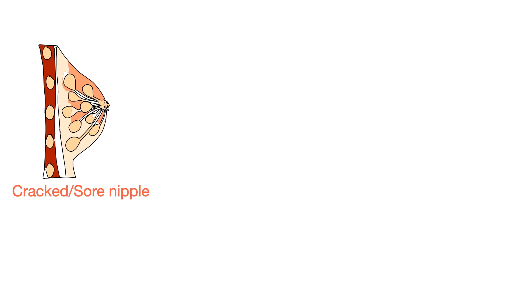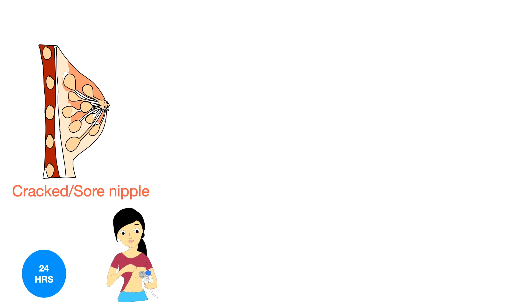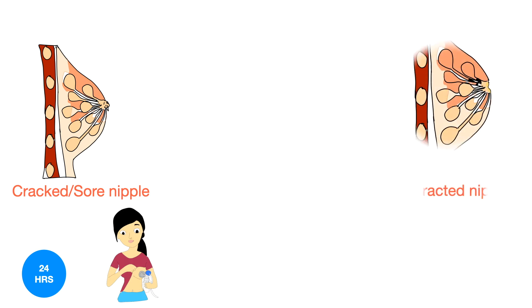If a nipple becomes cracked or sore during lactation, it should be rested for 24 to 48 hours and the breast should be emptied using a pump. Feeding should be resumed as soon as possible. In case of retracted nipple, mechanical suction devices are in use with some effect.